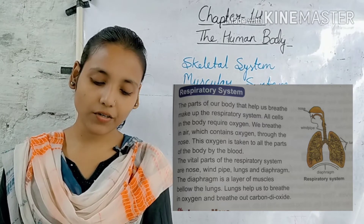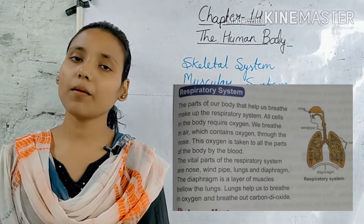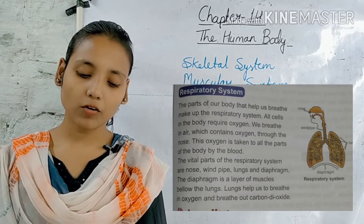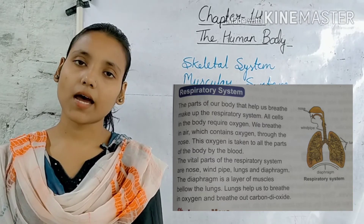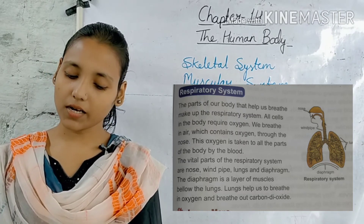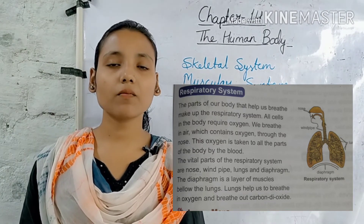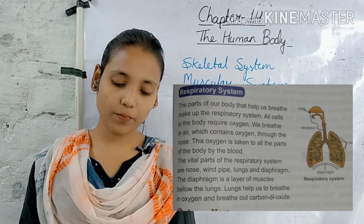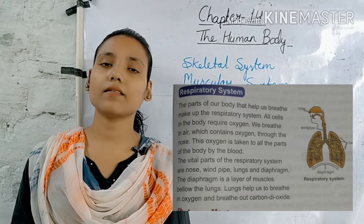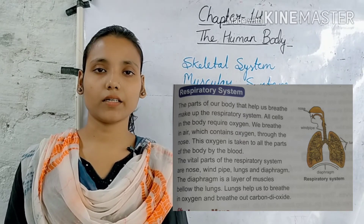The vital parts of the respiratory system are nose, windpipe, lungs and diaphragm. Vital का मतलब होता है महत्वपूर्ण। तो respiratory system के सबसे महत्वपूर्ण अंगों के नाम हैं: nose, windpipe, lungs and diaphragm. The diaphragm is a layer of muscles below the lungs. Diaphragm फेफड़ों के नीचे की मांस पेशियों की एक परत है। Lungs help us to breathe in oxygen and breathe out carbon dioxide. Oxygen में सांस लेने के लिए और carbon dioxide gas बाहर निकालने में lungs हमारी सहायता करते हैं। Clear everyone?